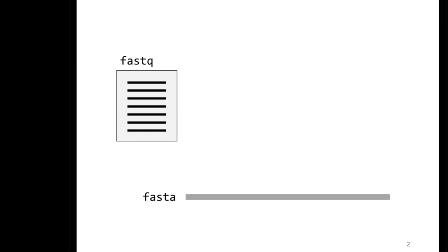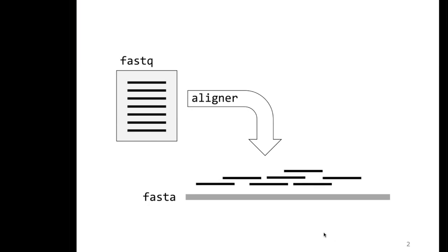Assuming you have a reference genome, an aligner tries to find for each read the most likely position on the reference genome where it could have originated from in the sample you've been sequencing. That information is stored in a SAM file. If you compress it, it's called a BAM file. The positions where reads align to the reference genome are stored there, and the aligner is there to generate that SAM file.